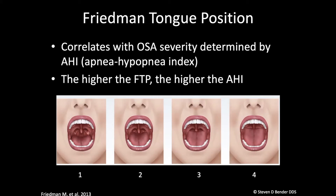Part of a comprehensive screening for patients with sleep disorder breathing would be what's known as the Friedman tongue position. This has been previously termed the modified Mallampati score or the Mallampati score. All of these have been validated by Dr. Friedman himself.